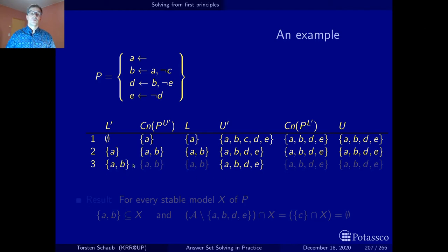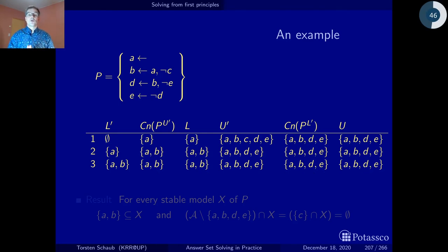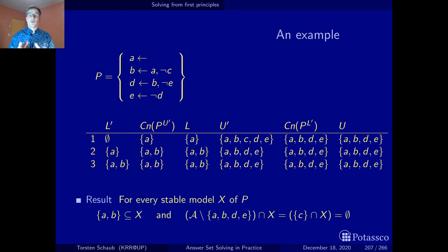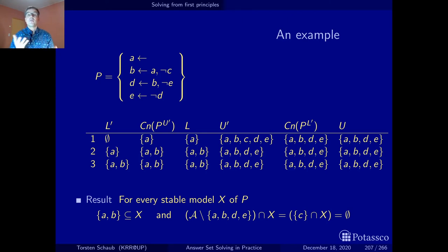The upper bound stays the same, and in the third iteration nothing further changes — we reach a fixed point. The result is {A, B} as the lower bound and {A, B, D, E} as the upper bound. C is not in the upper bound, so C must be false. For every stable model X of P, A and B must be contained in it, and C cannot be. We cannot decide D and E — they remain open, and we'll see later how to handle that.